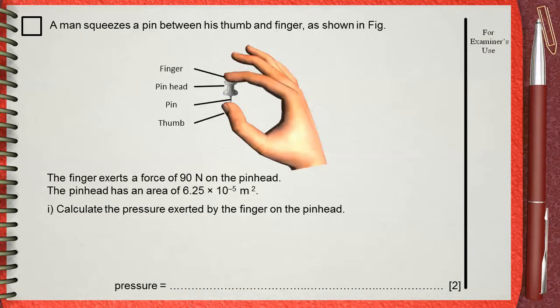A man squeezes a pin between his thumb and finger, as shown in the figure. The finger exerts a force of 90 newtons on the pinhead. The pinhead has an area of 6.25 times 10 to the power negative 5 meter squared. Calculate the pressure exerted by the finger on the pinhead.